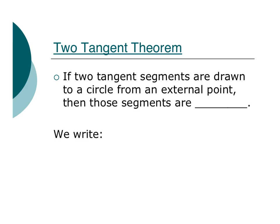So here we have the two tangent theorem. If two tangent segments are drawn to a circle from an external point, then those segments are congruent. I like to think of this as the ice cream cone theorem. If I draw a segment that's tangent here and tangent out here, I've got kind of like an ice cream cone going on. And I know that these two segments are congruent when they're drawn to the point of tangency.